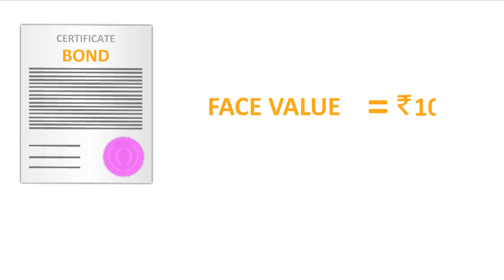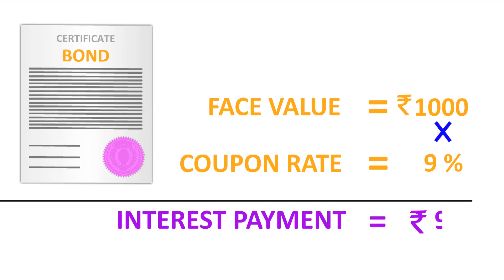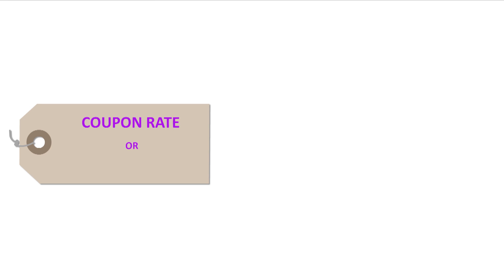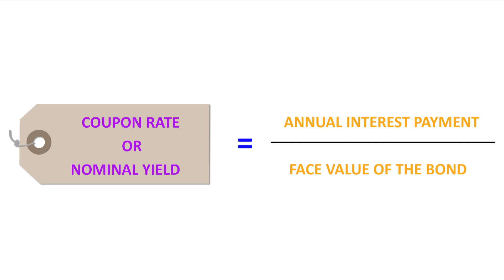Mudra wants to buy a bond with a face value of Rs. 1000 and a coupon rate of 9%. He would receive an interest payment of Rs. 90 every year on his bond. Coupon rate or nominal yield is equal to annual interest payment divided by the face value of the bond.